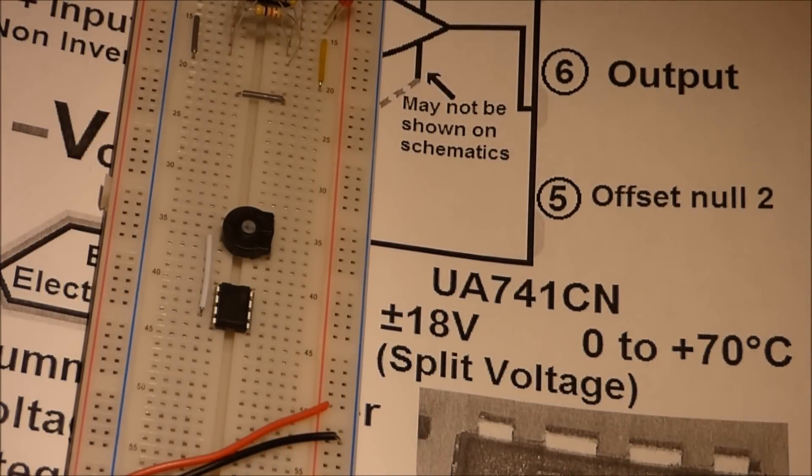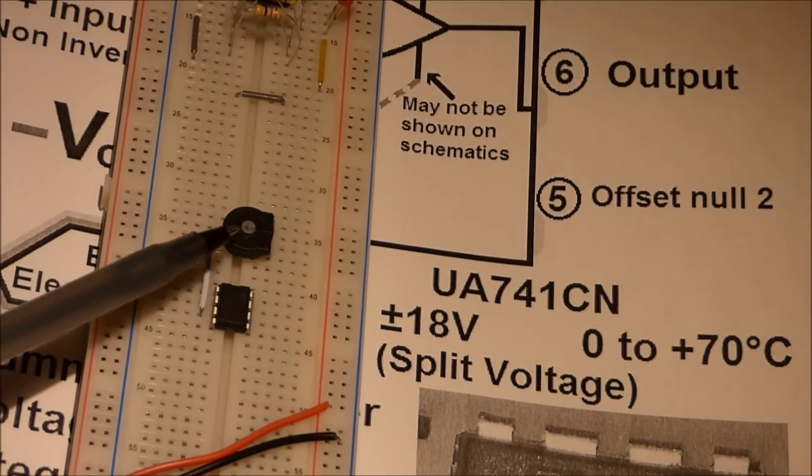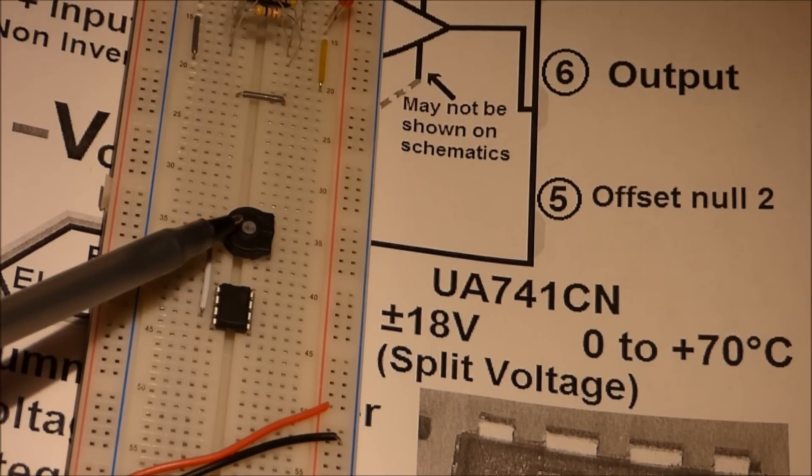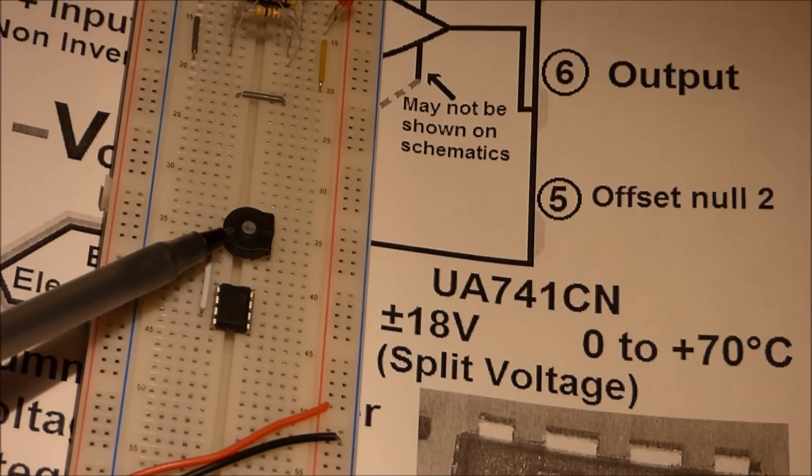Now, one thing I want to mention when you use these trim pots, these variable resistors, on these boards, the pins don't fit in terribly well. They're a little bit larger than the holes.